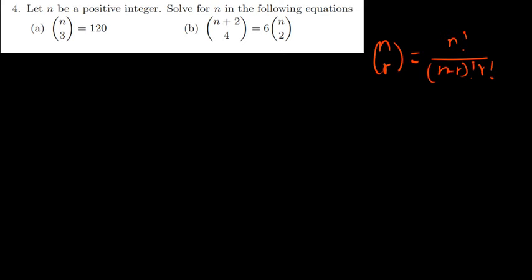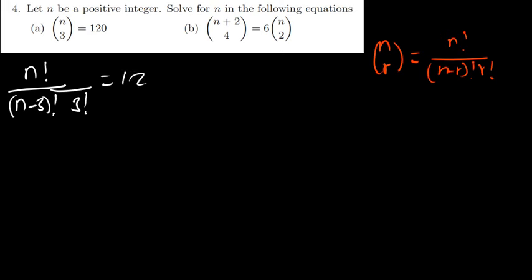So I'm going to write this. I'll say n choose 3 is going to be n factorial divided by n — r in this case is 3, so I put n minus 3 in brackets, factorial, then times 3 factorial, should equal to 120. We have been told that n has to be positive, so as we are solving this, we should keep in mind that n has to be positive. When I find that n is negative, I'm not going to consider that.